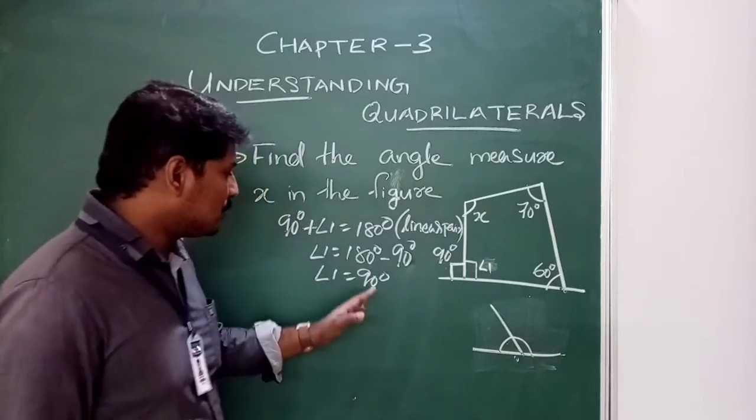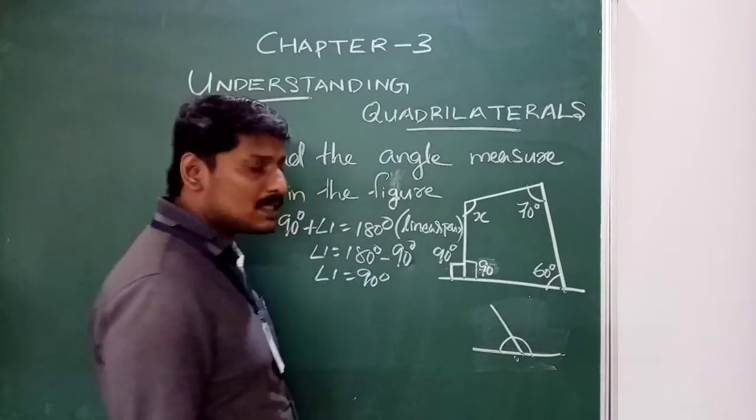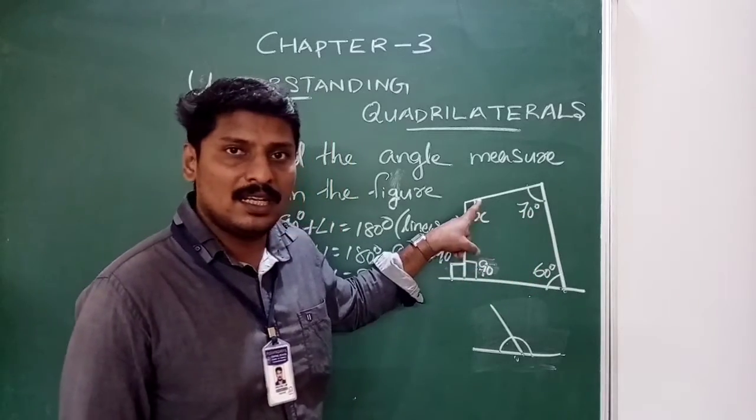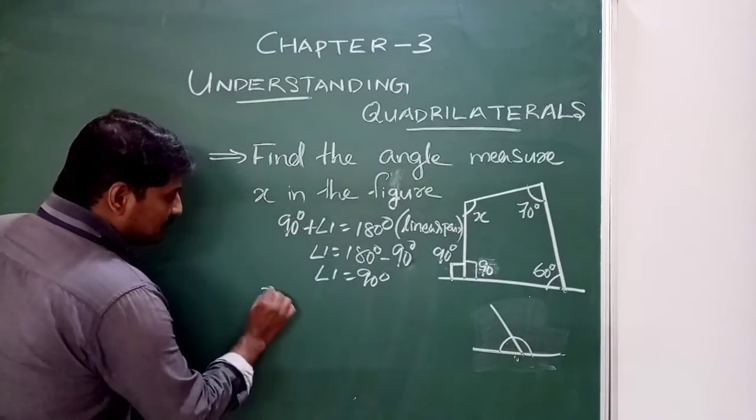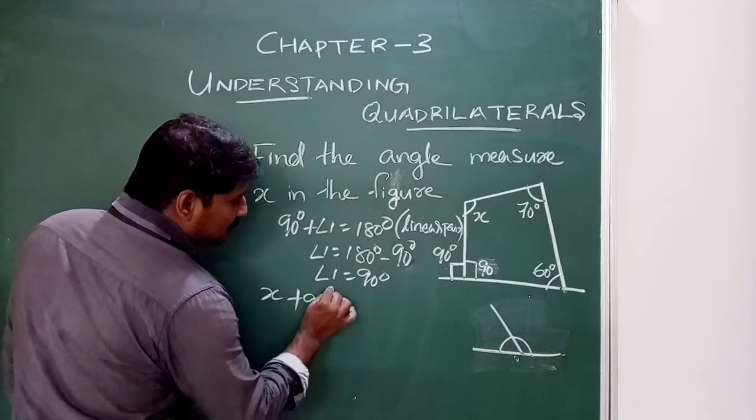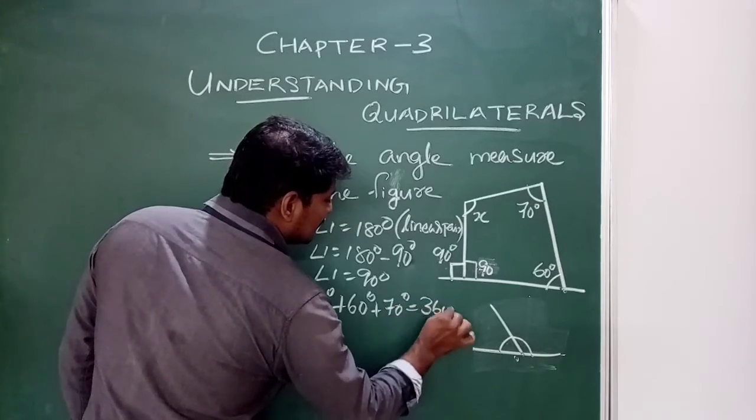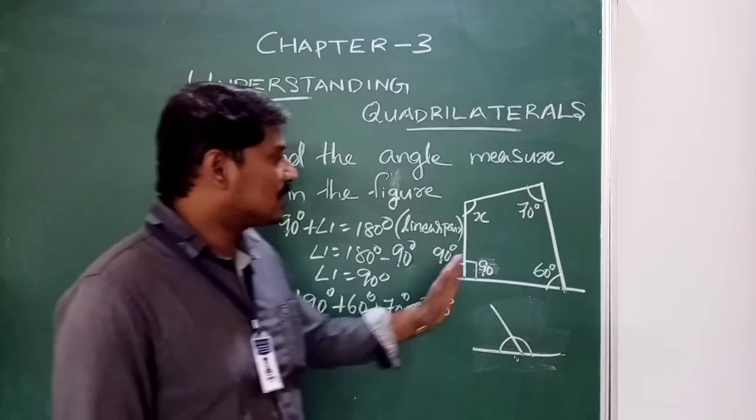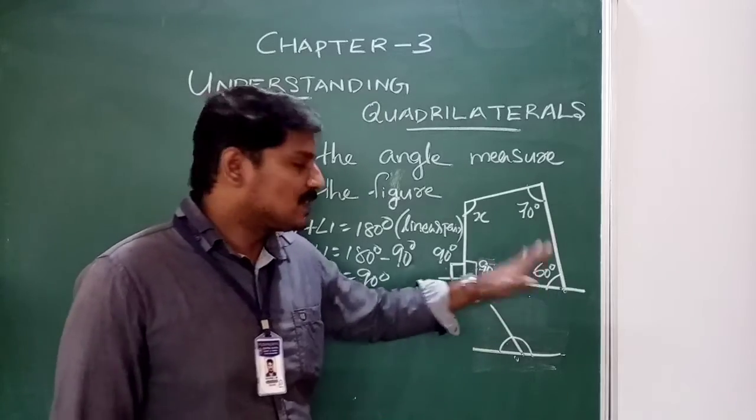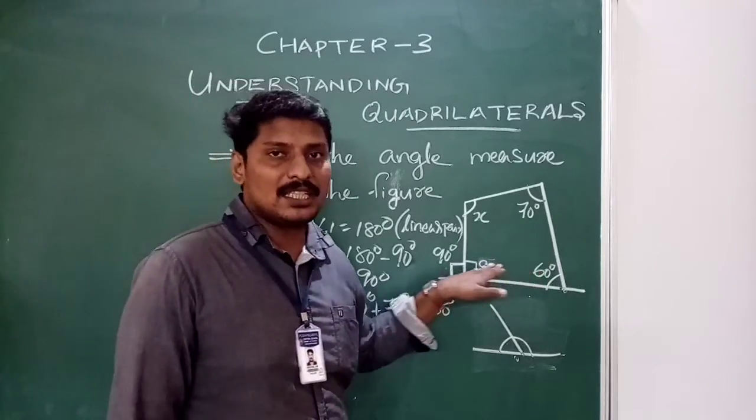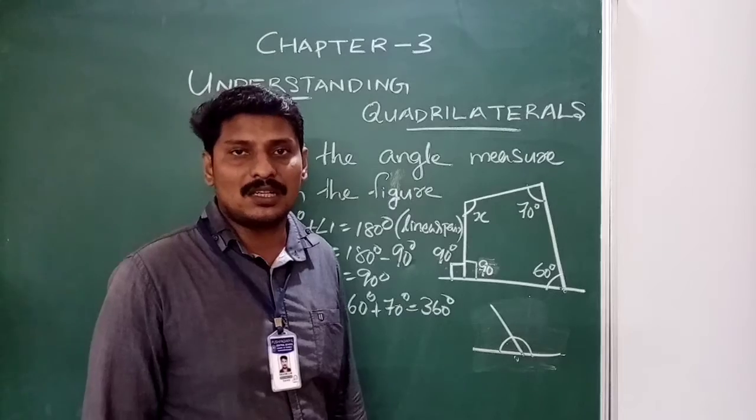This is linear pair. Okay, back to 90 degrees. Now place 90 degrees. The quadrilateral is 4 sides to add, how much time will be? Now, x plus 90 degrees plus 60 degrees plus 70 degrees is equal to 360 degrees.